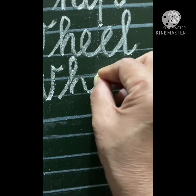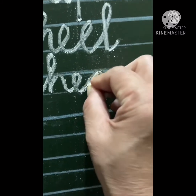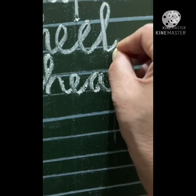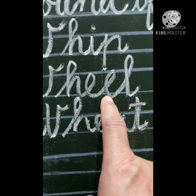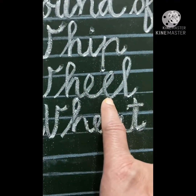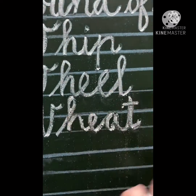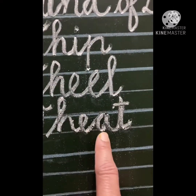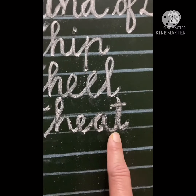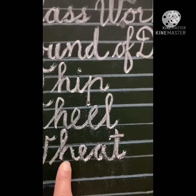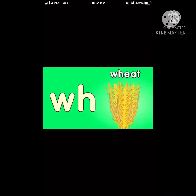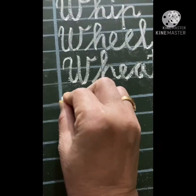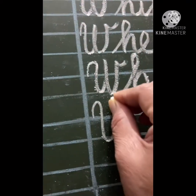The next word: W-H-E-A-T. Here you need to understand the difference — double E gives a long 'ee' sound, and EA also gives a long 'ee' sound. So the word is wheat. Wheat is a type of grain.